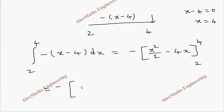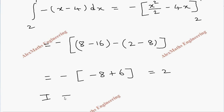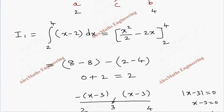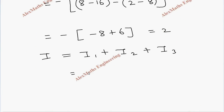Evaluating from 2 to 4: upper limit gives 16 by 2 minus 16, which is 8 minus 16 equals minus 8. Lower limit gives 4 by 2 minus 8, which is 2 minus 8 equals minus 6. So minus(minus 8 minus (minus 6)) equals minus(minus 2) equals plus 2, giving I3 equals 2. Finally, I equals I1 plus I2 plus I3 equals 2 plus 1 plus 2, which is 5.